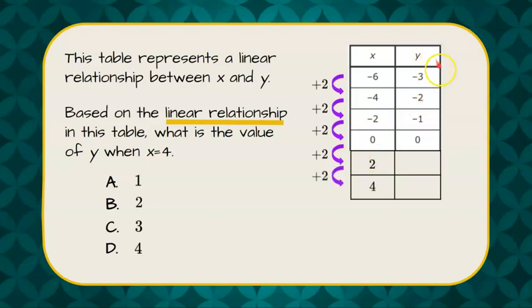Now let's identify the rate of change in y. Negative 3 to negative 2 is add 1, so we're repeatedly adding 1. 0 plus 1 is 1, and 1 plus 1 is 2.